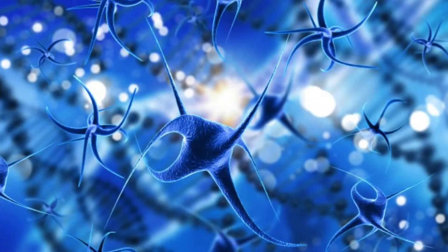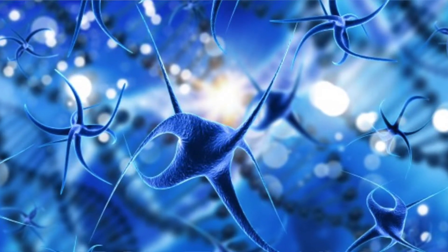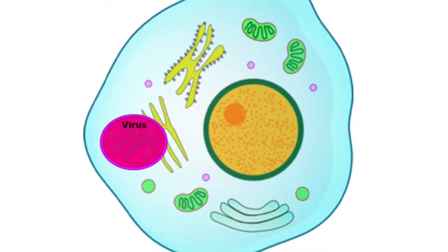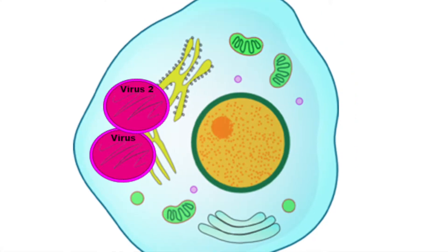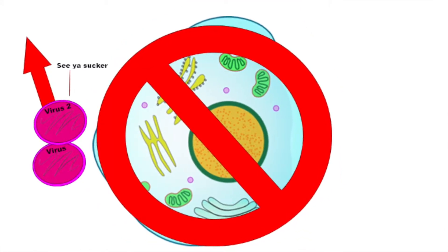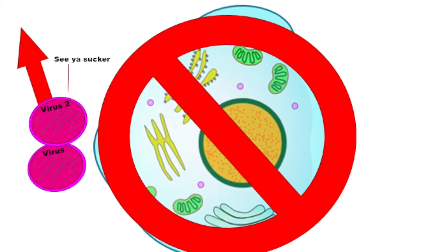So, how can viruses cause diseases if they're not living? Well, viruses can only reproduce in other living organisms. When they get inside one of an organism's cells, they use the cell's genetic material to reproduce. The virus then kills the cell, and the reproduced viruses travel to infect another cell.